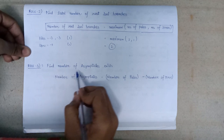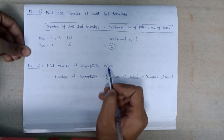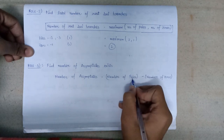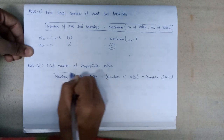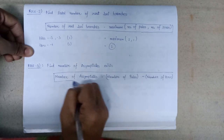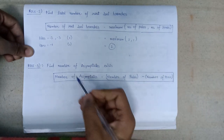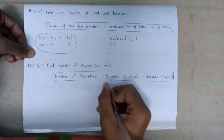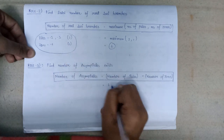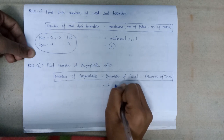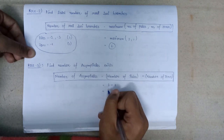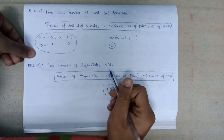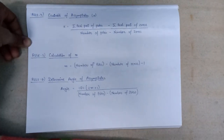Rule number three says: find the number of asymptotes. The total number of asymptotes is determined by the formula: number of poles minus number of zeros. Using the above example, the number of asymptotes equals 2 minus 1, which equals 1. So there is only one asymptote.